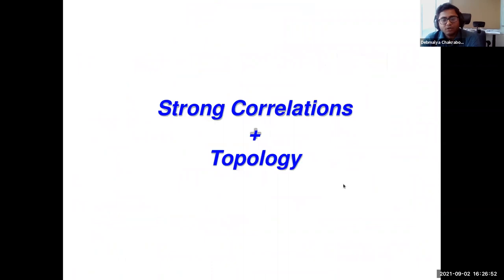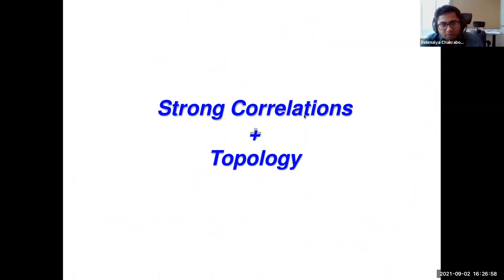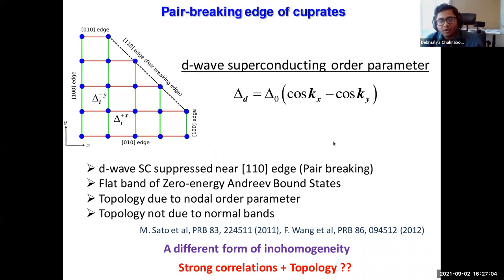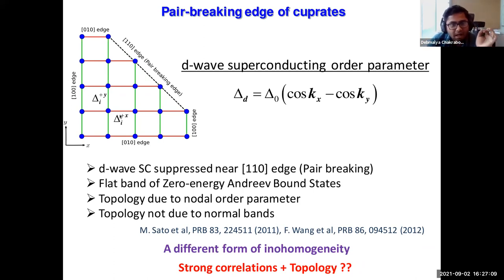Now let's consider another interplay: what happens to topology in the presence of strong correlations. How does topology come in? We have a bulk d-wave superconductor — let's see.